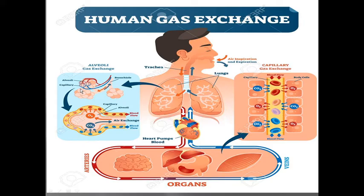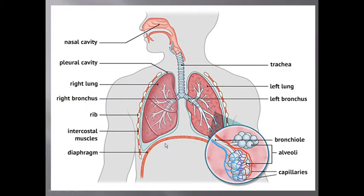Let's look at the other diagram. Here we have air entering into the nose, then the trachea, then dividing into two bronchus, and the bronchus into bronchioles, and then finally reaching the alveoli where gas exchange takes place, where we have blood capillaries.